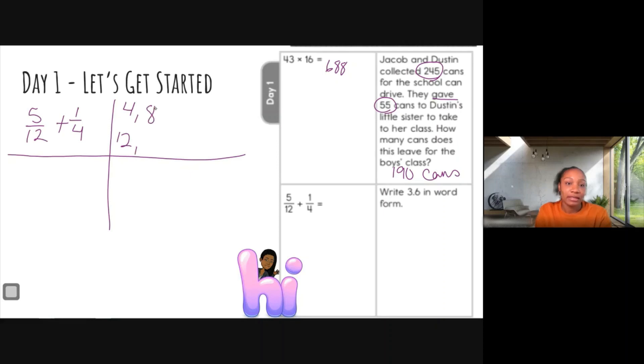So 4, 8, 12, 16, and 20. I'm going to stop right there for now. If I need to go further, I can. Okay, 12, 24, 36. And I'm going to stop right there for now because I see a number that they both have in common, and it's their least common denominator, and that is 12.